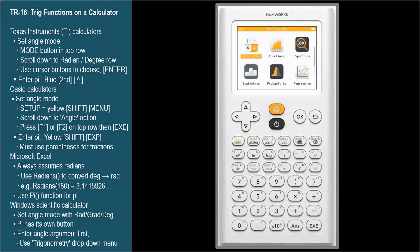For the NumWorks calculator, set the angle mode in Settings, which is the lower right option. Scroll to it and press OK. Angle measure is the first option.